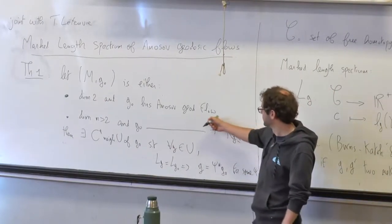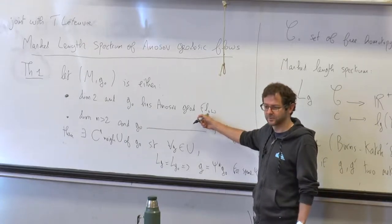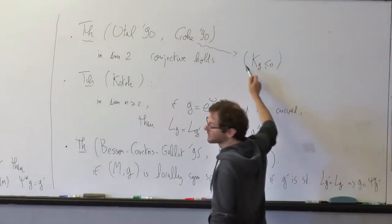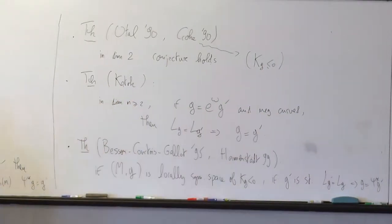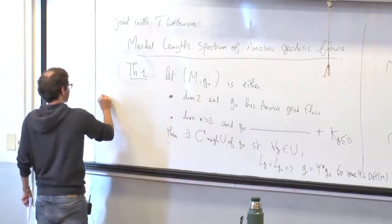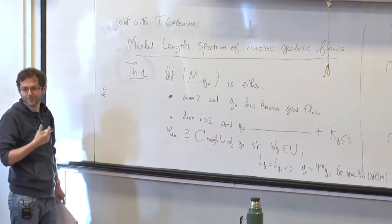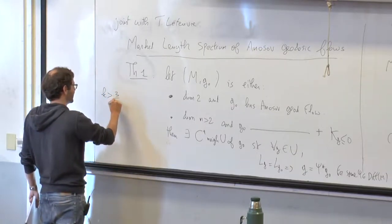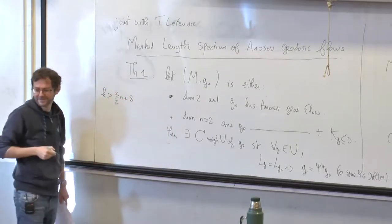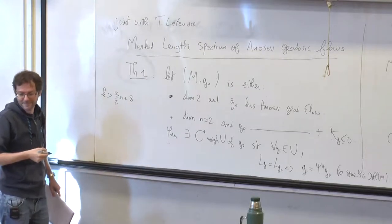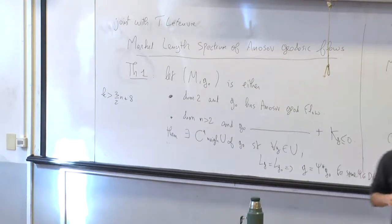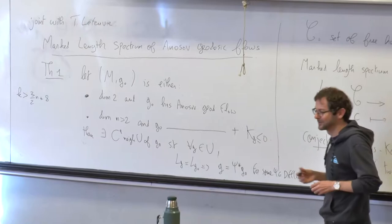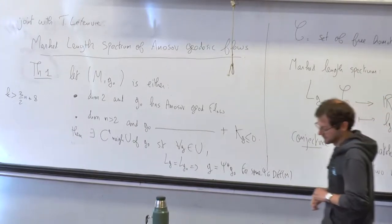The result is even new in dimension 2, because in dimension 2 in the Anosov case, Otal and Croke proved a global result without needing the metric to be close. Regarding the value of k: in our proof it is non-optimal — something like 3n/2 + 8. With a lot of work we could probably get down to something like 2 or 3. It comes from analytic methods, and likely C² or C³ should work.